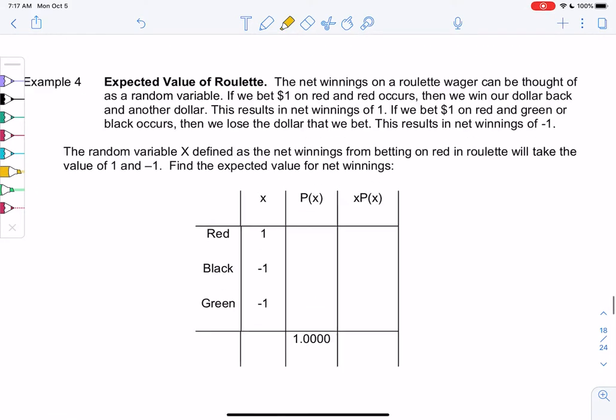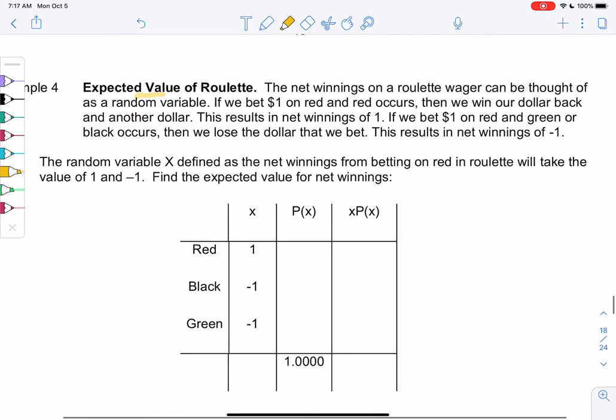We're going to look at expected value of this game called roulette. Casinos love expected value because that's how they make sure they're going to win money and not you. So roulette is basically a random number generator in a way. We'll see in the thing below, we're going to have a ball spin around a wheel. Let's look at it because some of us have probably never seen it.